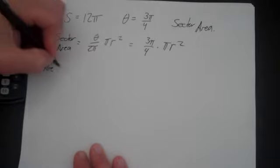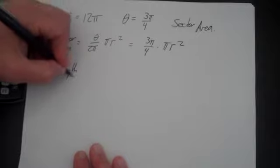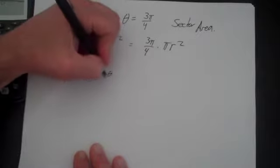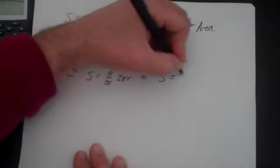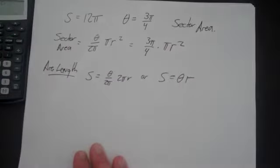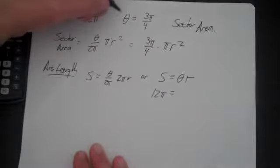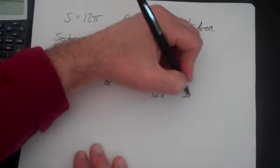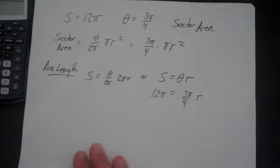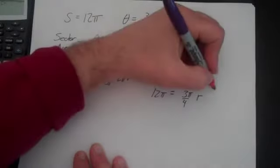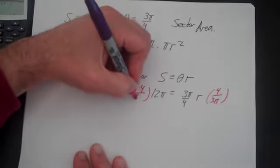So let's go back to the arc length problem. And there, that's S is equal to theta over 2 pi times 2 pi r or S is equal to theta r. S is 12 pi, theta is 3 pi over 4 times r. You multiply by the reciprocal. The reciprocal here is 4 over 3 pi, 4 over 3 pi.